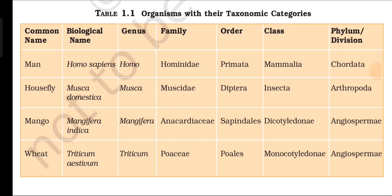Table 1.1 — Organisms with their taxonomic categories. Man: biological name Homo sapiens, genus Homo, family Hominidae, order Primata, class Mammalia, phylum Chordata. Housefly: biological name Musca domestica, genus Musca, family Muscidae, order Diptera, class Insecta, phylum Arthropoda. Mango: biological name Mangifera indica, genus Mangifera, family Anacardiaceae, order Sapindales, class Dicotyledonae, division Angiospermae. Wheat: biological name Triticum aestivum, genus Triticum, family Poaceae, order Poales, class Monocotyledonae, division Angiospermae.